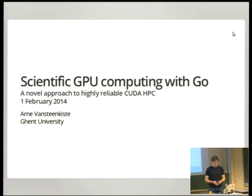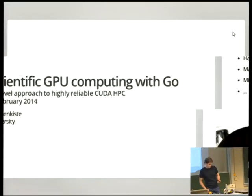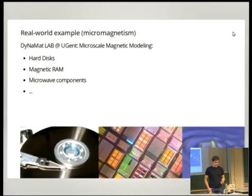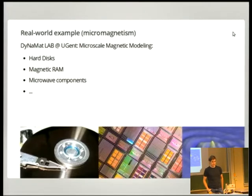I mainly want to give you some feeling for how well Go is suited, and what are the pros and cons for scientific GPU computing. I'm sharing this from my own experience at Gantt University where I have been developing a micromagnetic simulation program that can be used to model hard disks, magnetic ramps, and so on.